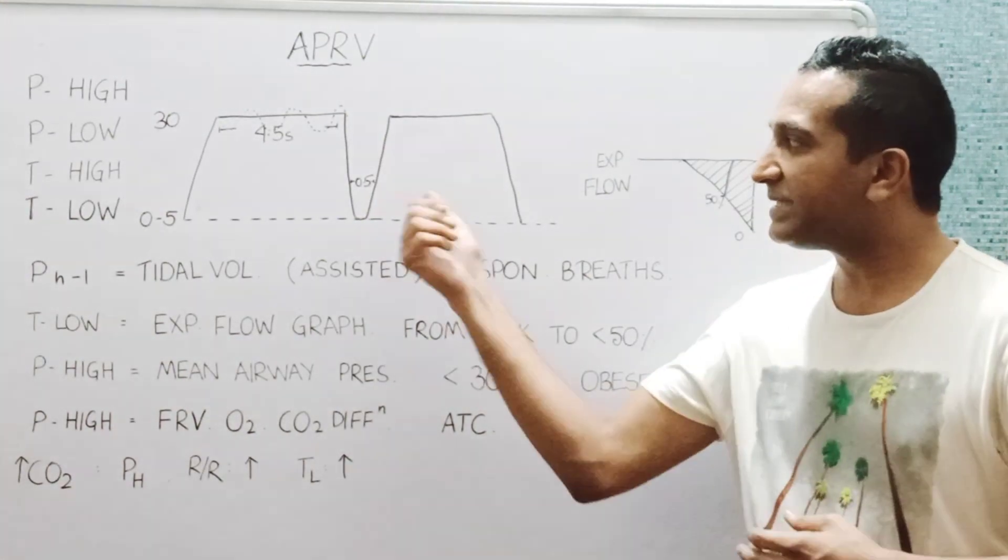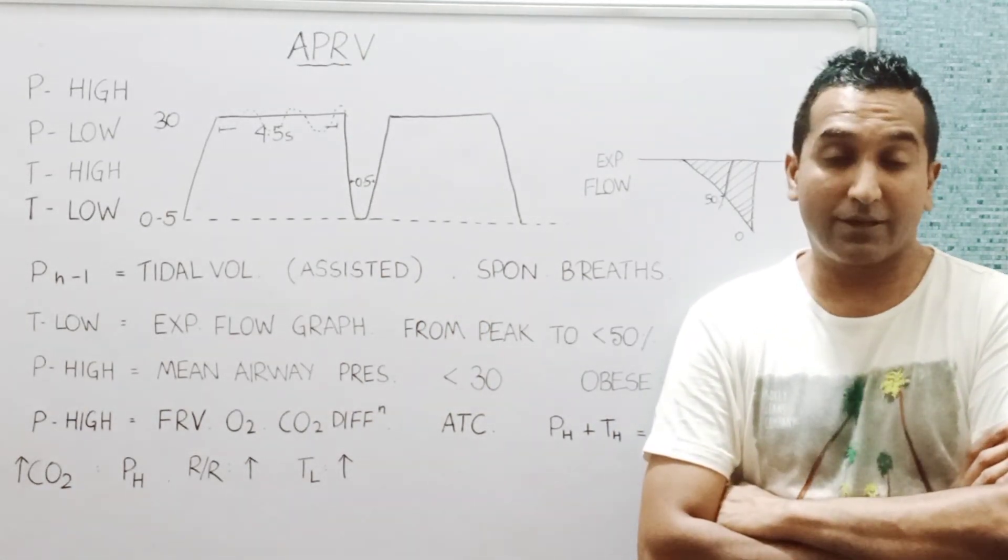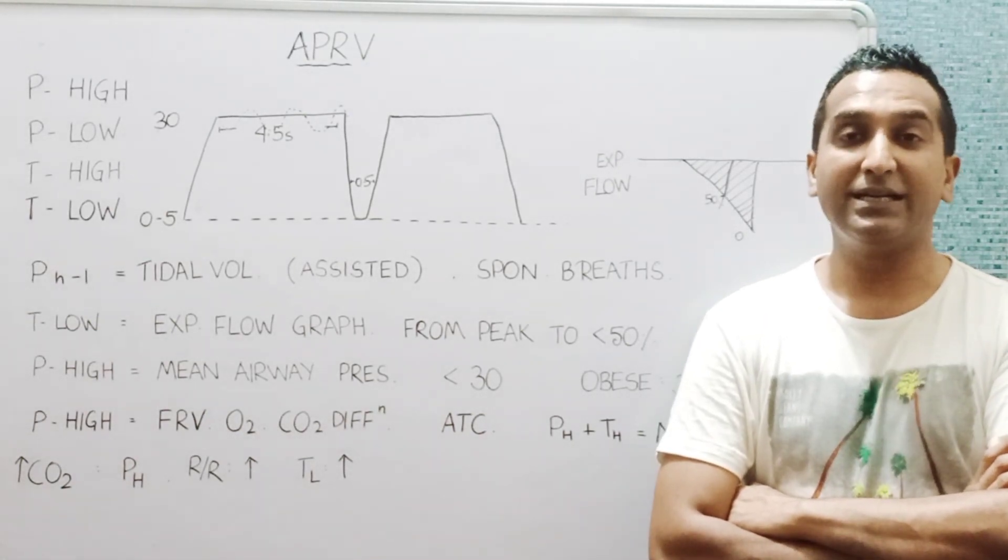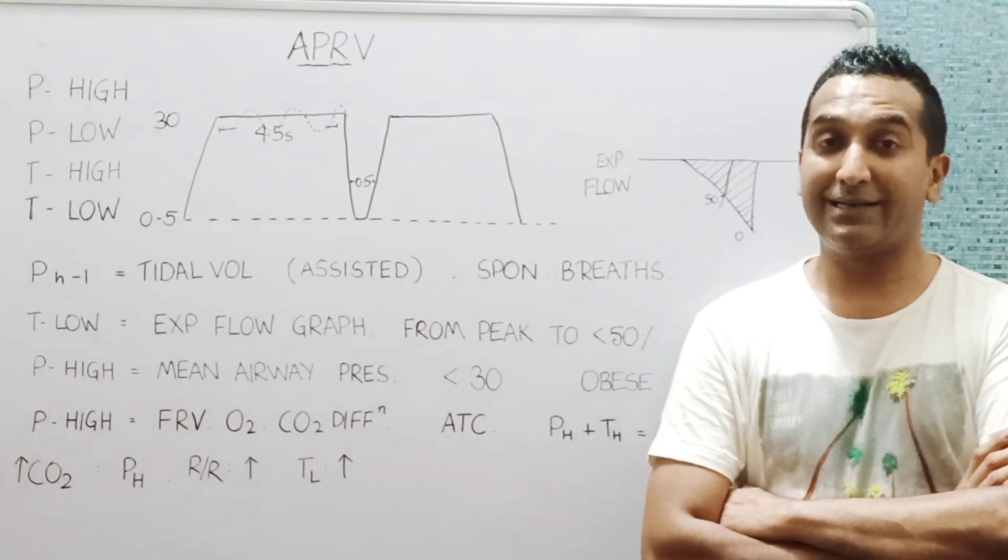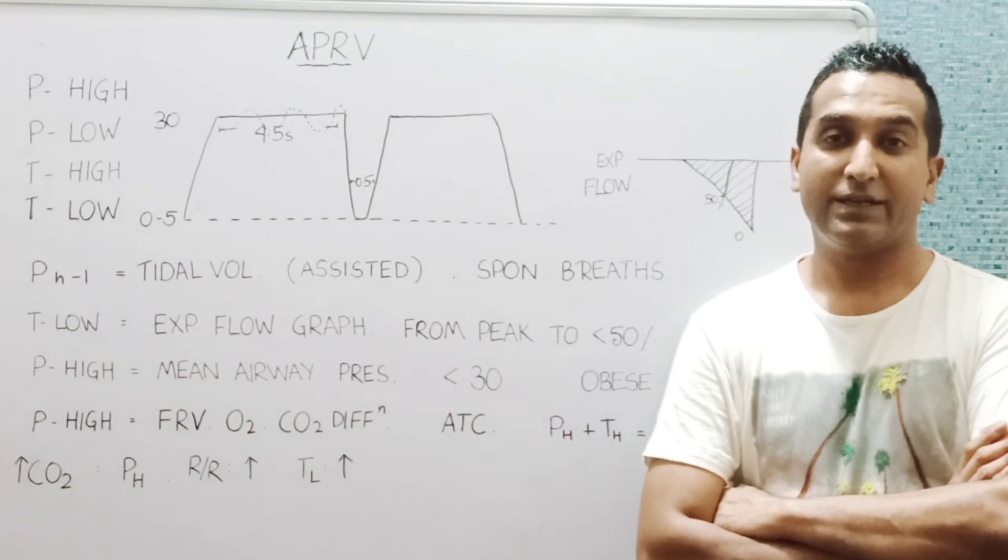Is this T low good enough to allow exhalation? Well, it's generally good enough because in ARDS there are non-compliant lungs, and the expiratory flow constant of non-compliant lungs is actually high, so 0.5 seconds may be good enough to exhale and to bring down the carbon dioxide levels.